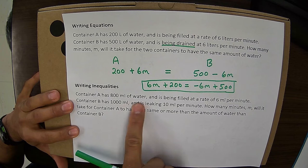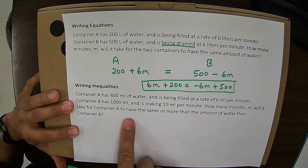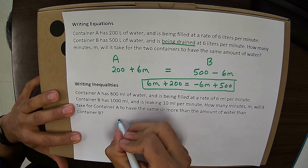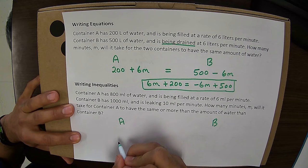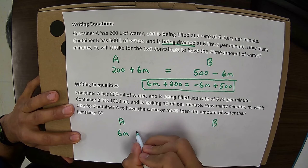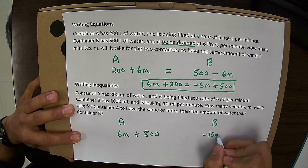Writing the inequalities here. Container A has 800 milliliters of water and is being filled at a rate of 6 milliliters per minute. Container B has 1,000 milliliters and is leaking at 10 milliliters per minute. How many minutes will it take for container A to have the same or more than the amount of water than container B? So again, the first thing I want to do is just write my expressions. So container A, it has 800 and is being filled at a rate of 6 milliliters per minute. So that's 6 milliliters per minute for container A and it already has 800. For container B, it's leaking. So that's going to be minus 10 milliliters per minute plus the 1,000 that it already has.